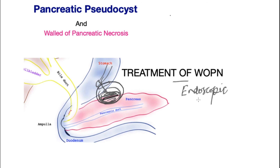Sometimes it requires several attempts to completely remove the dead pancreas. Surgery may be deployed, which may be minimally invasive such as laparoscopic or robotic, as well as open, and the aims are exactly the same. At the end of the procedure the hole in the cyst is stitched to a corresponding hole in the bowel or the stomach, as depicted here.